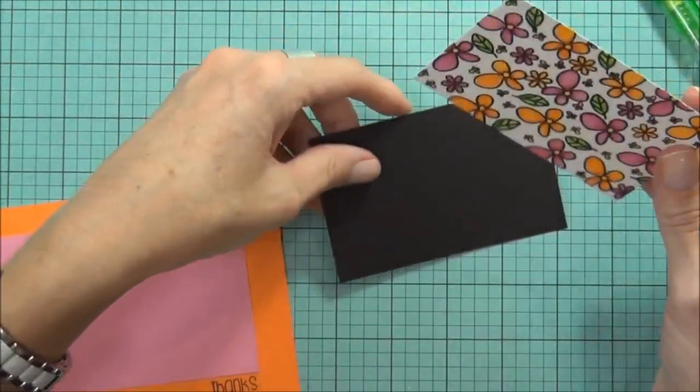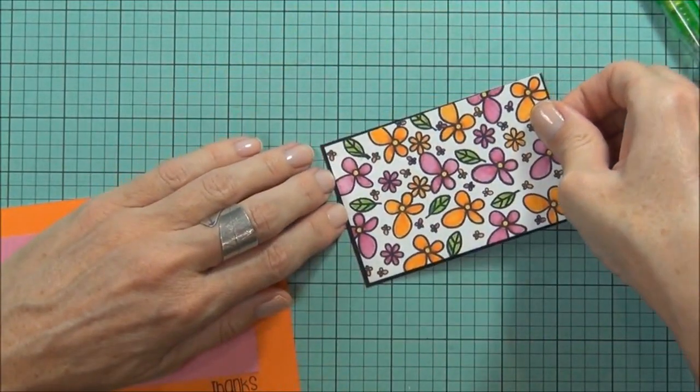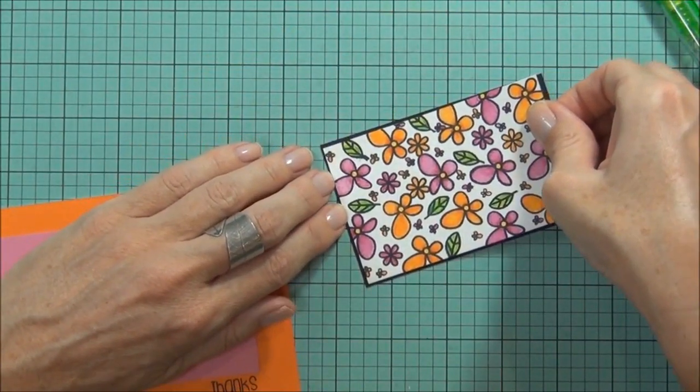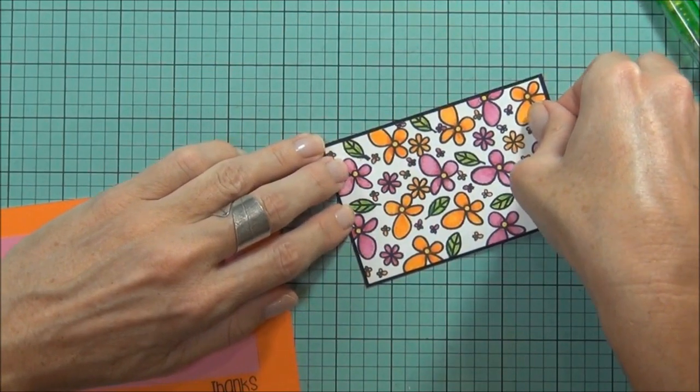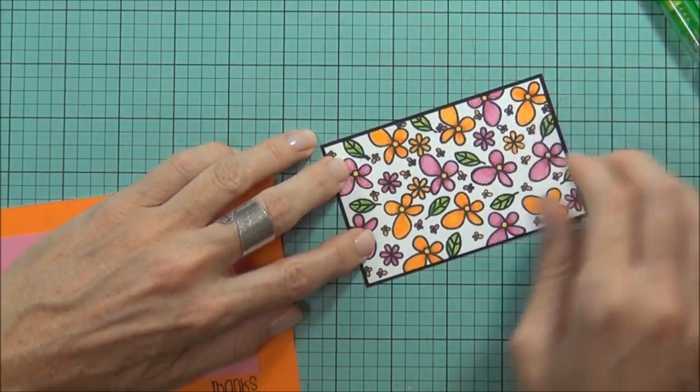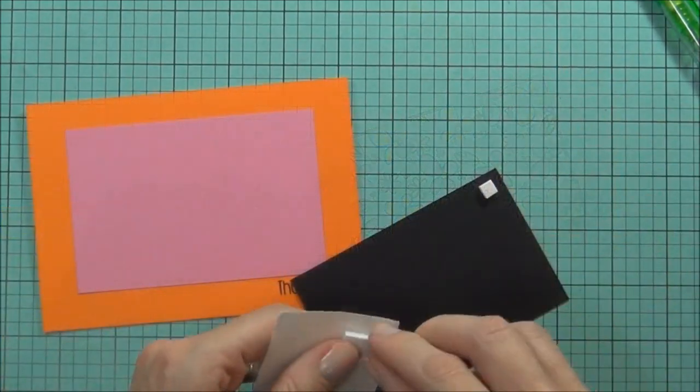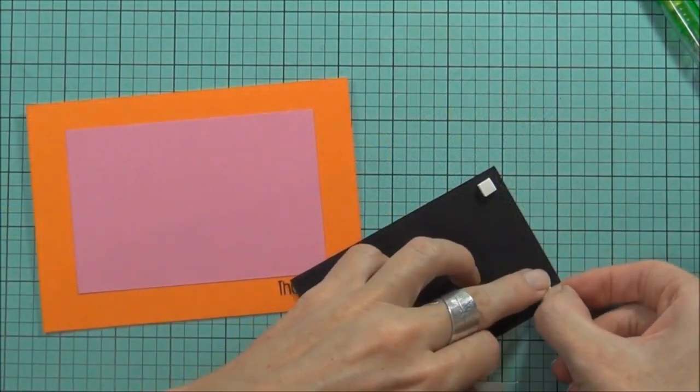It doesn't tend to warp too much with the Inktense Pencils. I'm mounting that with a really thin border of the cardstock and then I've got some foam squares.